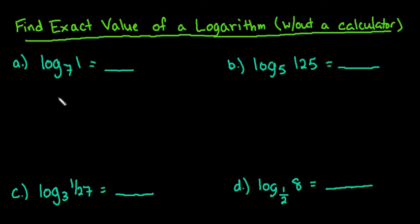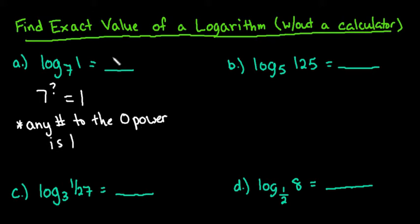So what we're going to do is we're looking for 7 to what power gives us 1. So we're always looking for the exponent on these because remember that this part is the exponent. So we're asking ourselves what would I have to raise 7 to to get 1. Remember that any number to the 0 power is 1. So for this one the answer is just going to be 0 because 7 to the 0 power is 1.